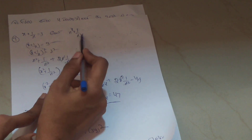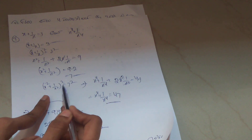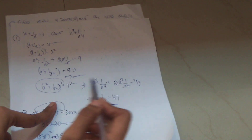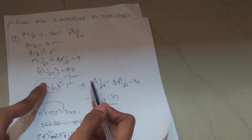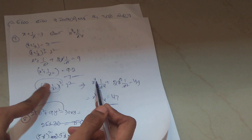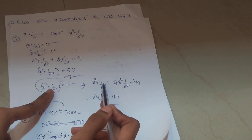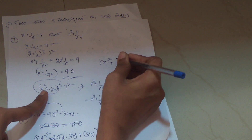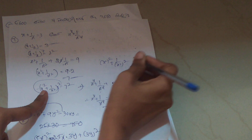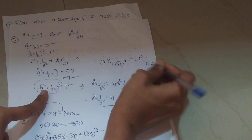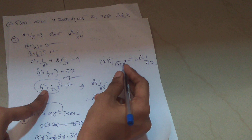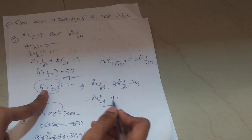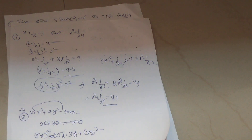We will do the same thing for power 4. Squaring on both sides: x square plus 1 by x square equal to 7 square. Using a plus b whole square formula: x square plus 1 by x square plus 2ab. 2 to the 4, x square x square cancel. So x power 4 plus 1 by x power 4 equal to 47 is the answer.